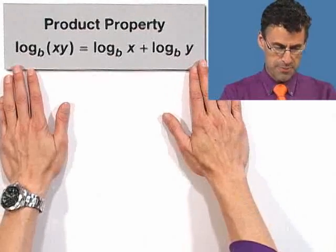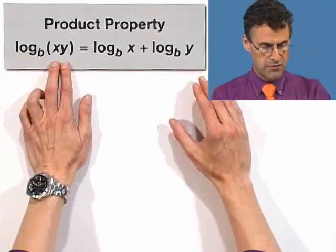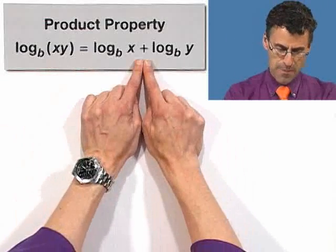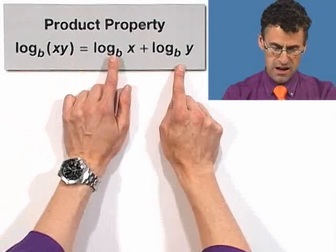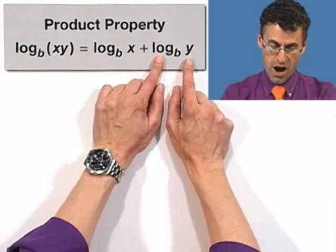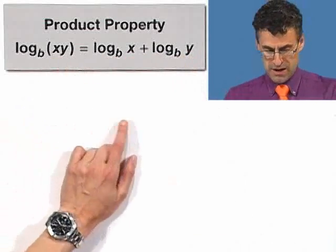First of all, there's that great product property, which says that the log of a product is the sum of the logs. So log of xy is log x plus log y. Really great property.